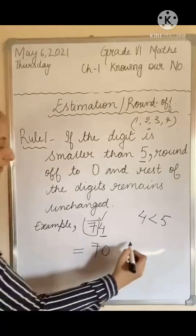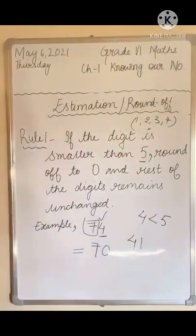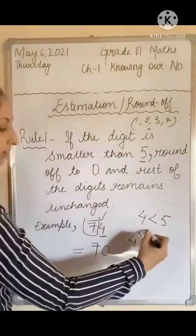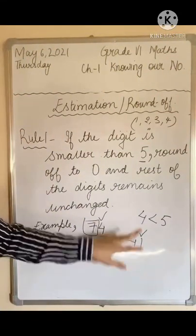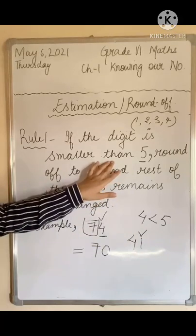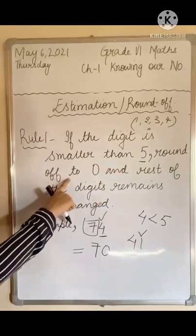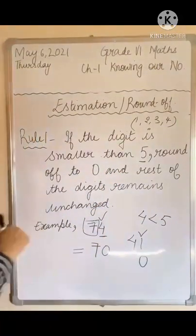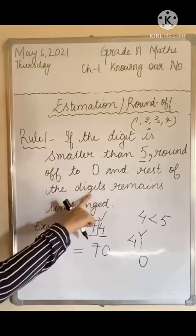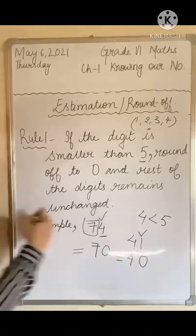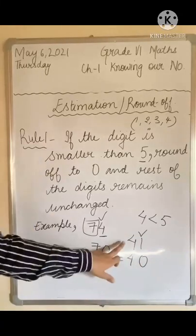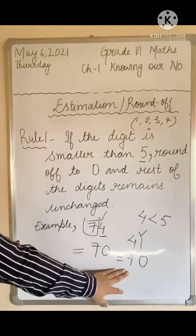Similarly, let's do another example. Let's take 41 and I want to round off the digit 1. Again, we see that 1 is less than 5. It means we will round off 1 to 0. The 1 is rounded off to 0 and the rest of the digits remain unchanged - 4 will remain unchanged. So the estimation value is 40.